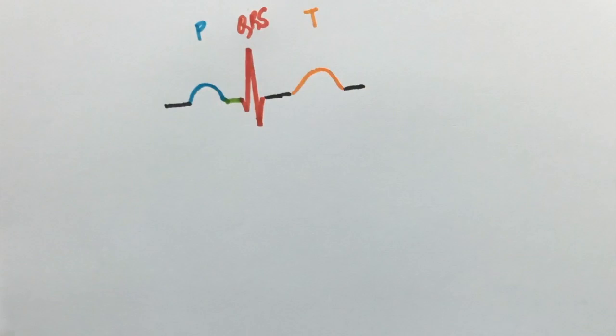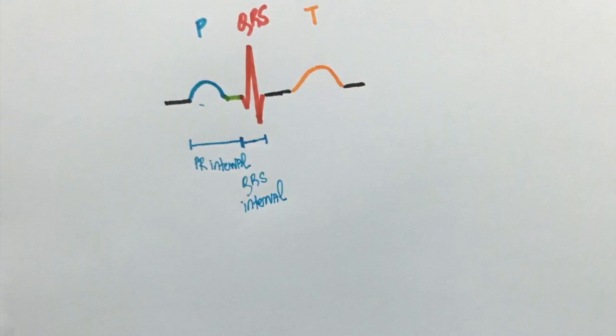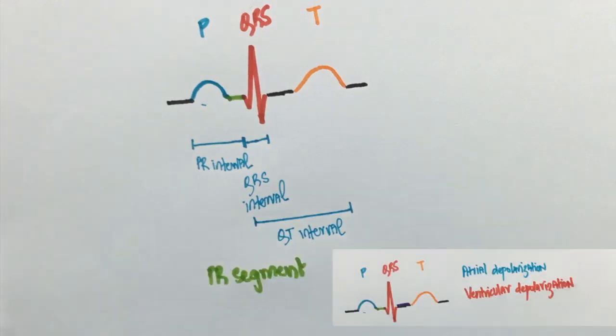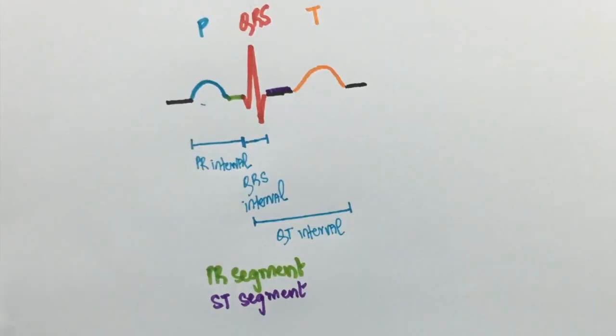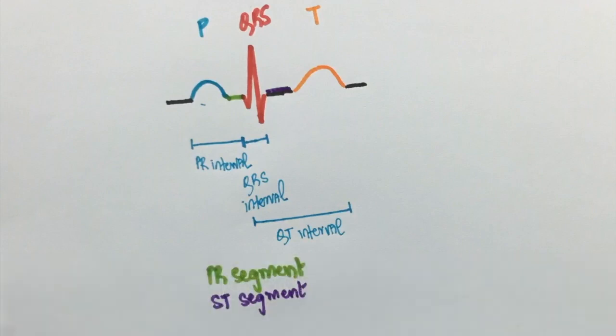The start of the P wave till the beginning of QRS is the PR interval. The entire red portion is the QRS interval. QT interval refers to the starting of the red wave here till the end of the T wave. PR segment is the portion between the end of the P wave and the beginning of QRS. This is basically the phase between atrial contraction and ventricular contraction. This delay is brought out by the AV node. The ST segment is between the QRS and the T wave. Segments and intervals might be a little confusing so I remember them by the letter S. S for segment and S for straight line. Intervals always include a wave.